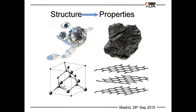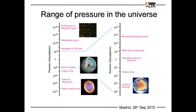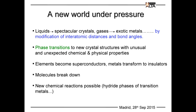Why do we study crystal structure at high pressure? Pressure is the essential parameter to modify the structure of a material. The range of pressure spans more than 60 orders of magnitude in the universe. Pressure can turn liquids into spectacular crystals, change gases into exotic metals by modification of the interatomic distances and bond angles. The most important phenomenon associated with pressure is polymorphism — we can access different crystal structures through phase transitions and get unexpected chemical and physical properties: elements become superconductors, metals transfer to insulators, molecules break down, and new reactions become possible.